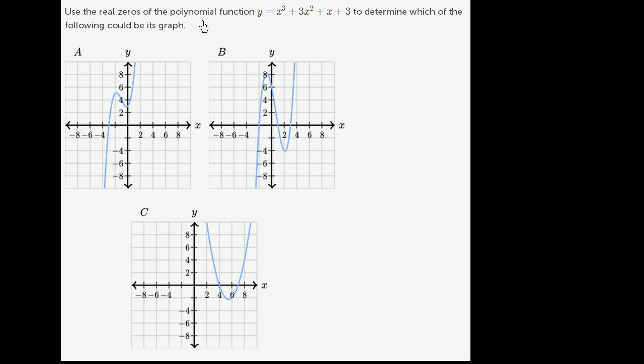Use the real zeros of the polynomial function y equals x to the third plus 3x squared plus x plus 3 to determine which of the following could be its graph. So there's several ways of trying to approach it. One, we could just look at what the zeros of these graphs are, what they appear to be, and then see if this function is actually 0 when x is equal to that.